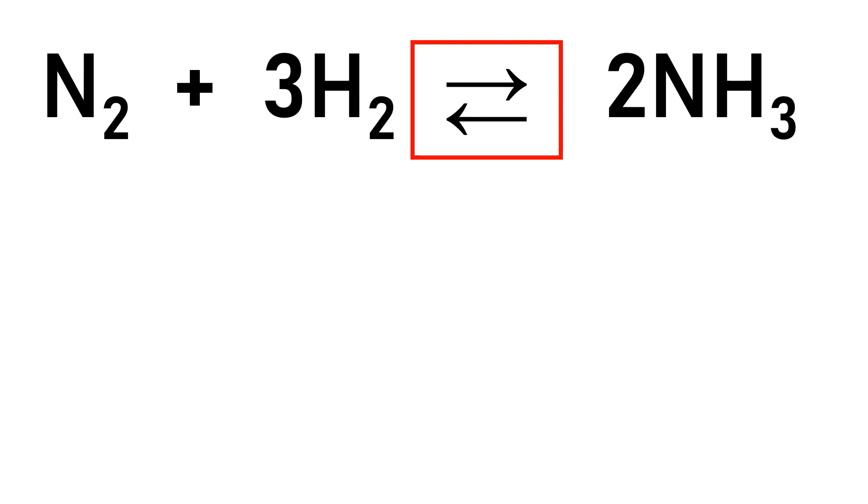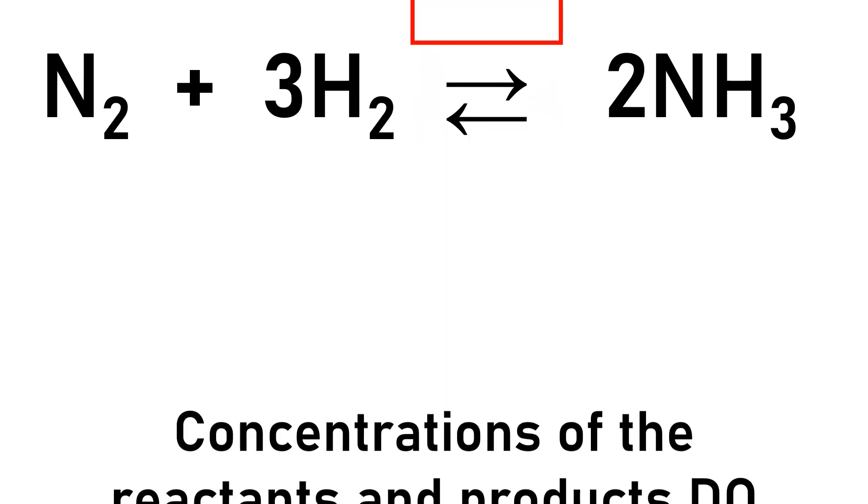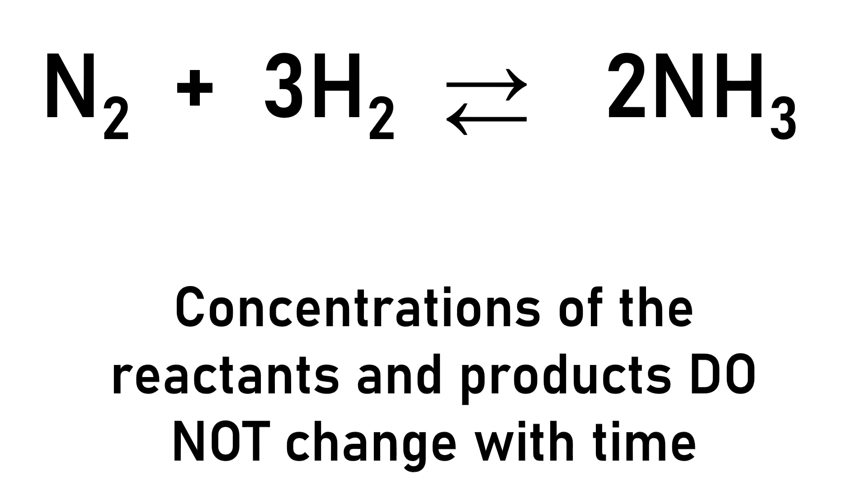There are two ways to think of equilibrium. First, equilibrium is the state where the concentrations of the reactants and products do not change with time.